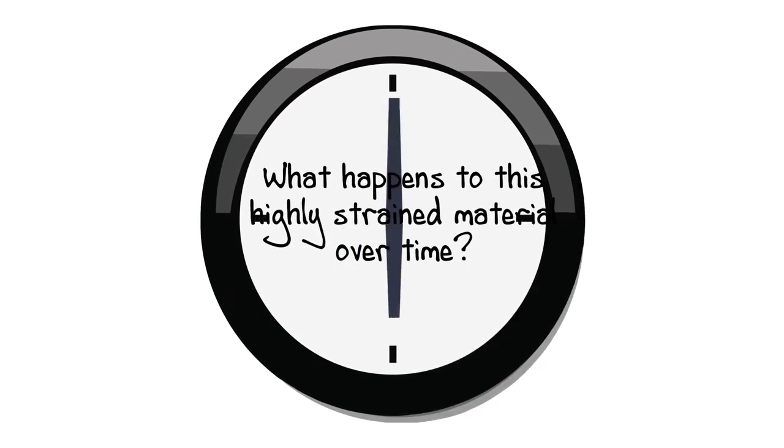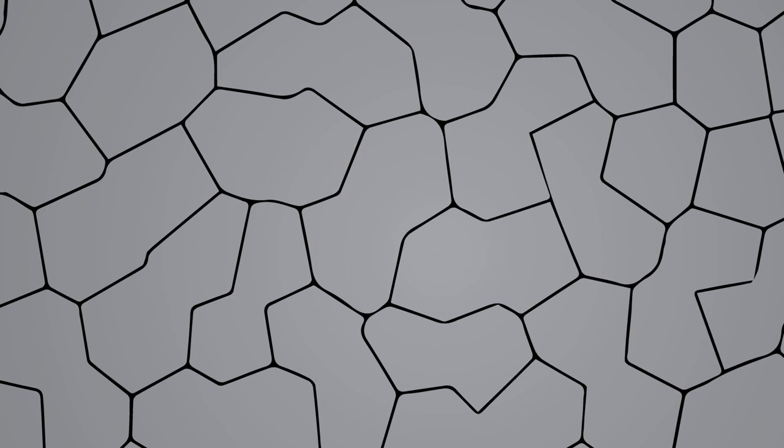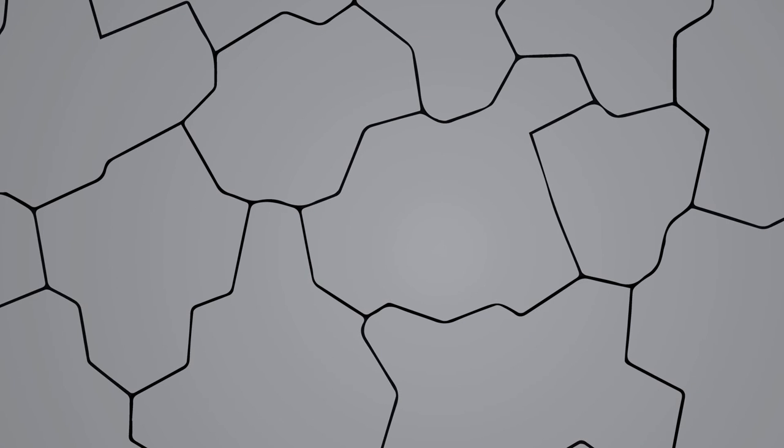So what happens to this highly strained material over time? After a while, the nanograins coalesce and grow into larger grains. The internal nanostructure undergoes complete recovery.